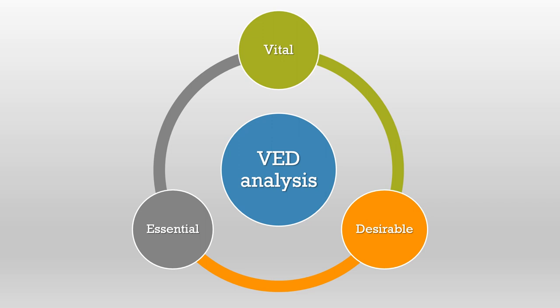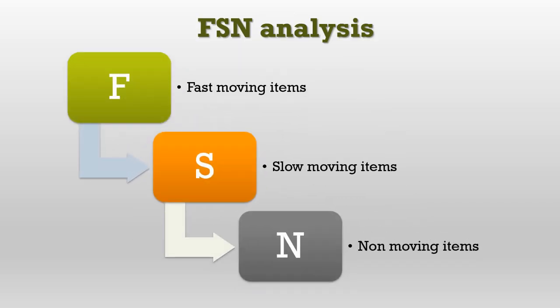Let's see FSN analysis. FSN stands for Fast Moving, Slow Moving, and Non-Moving items. These categories should be established by each organization based on consumption inside the hospital. Drugs that are fast moving should be purchased in higher quantities. Drugs that are slow moving should be purchased in moderate quantities, and non-moving drugs in low quantities. Accordingly, more of the budget percentage is allocated to fast-moving medicines, with remaining budget distributed to slow-moving and non-moving drugs.